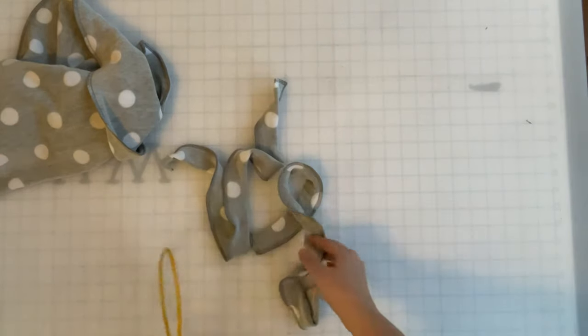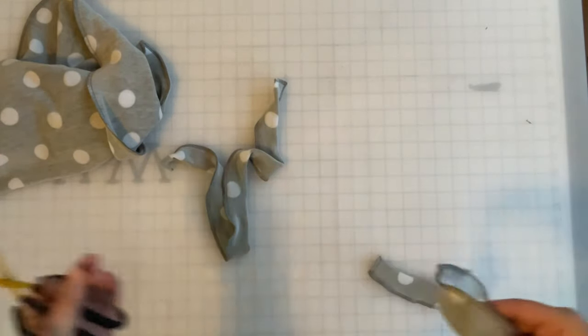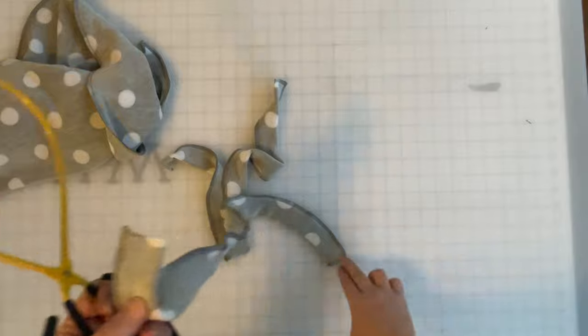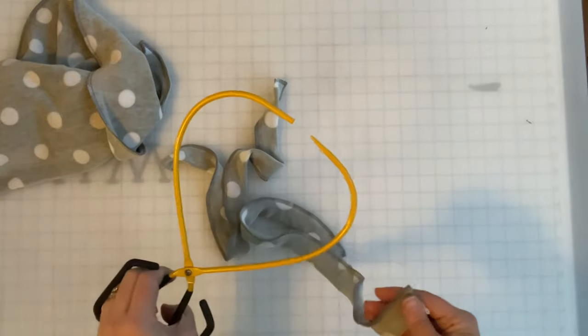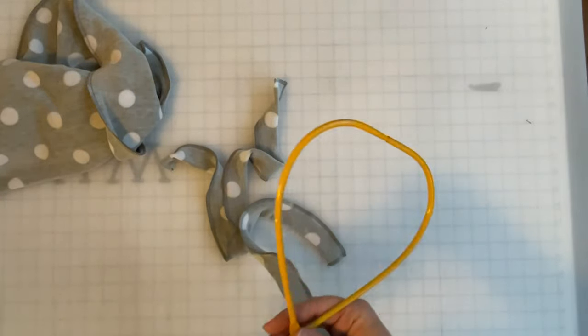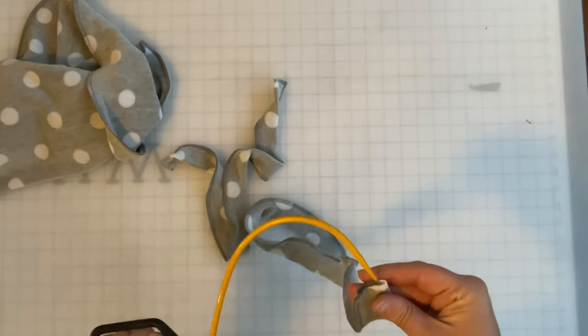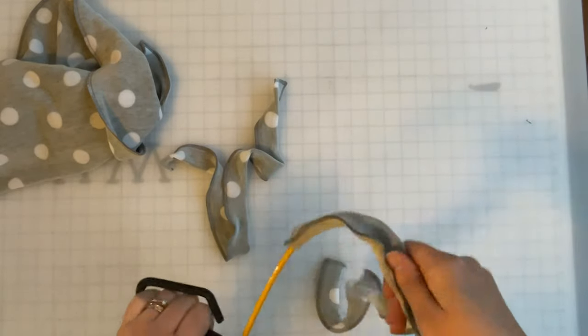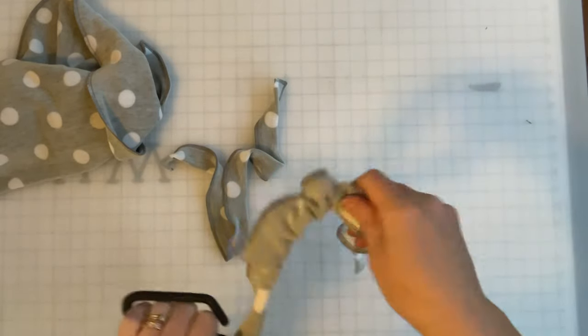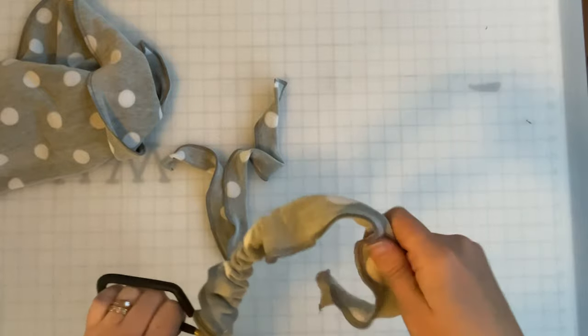Now that you have both pieces sewn with just one short end and the long end, grab your favorite turning tool. Mine happens to be this Easy Point and Tube Turner, and just flip both of those straps right sides out.